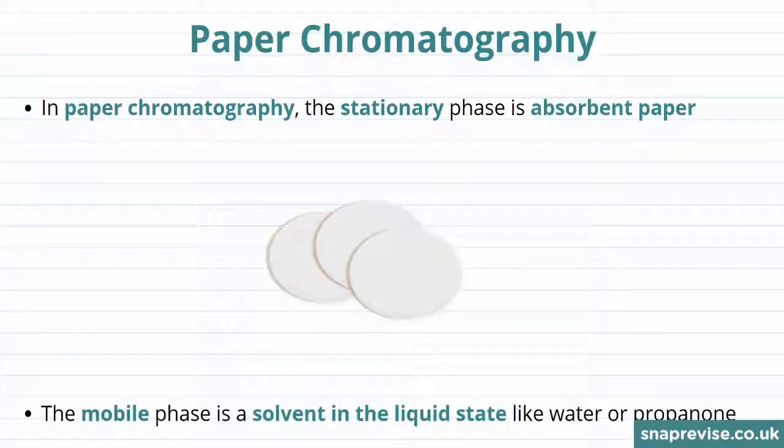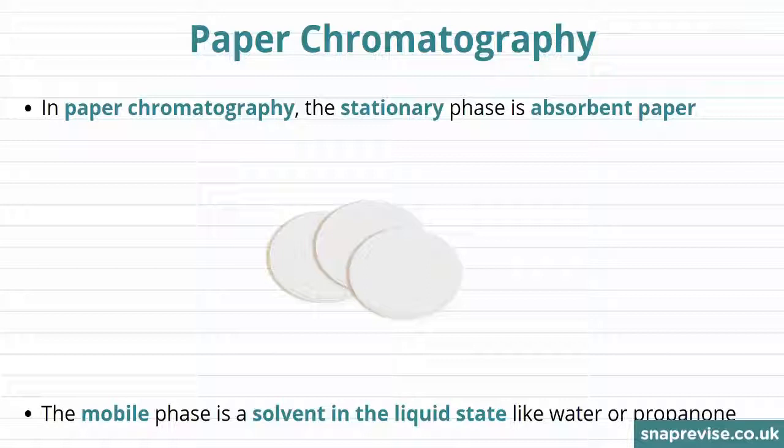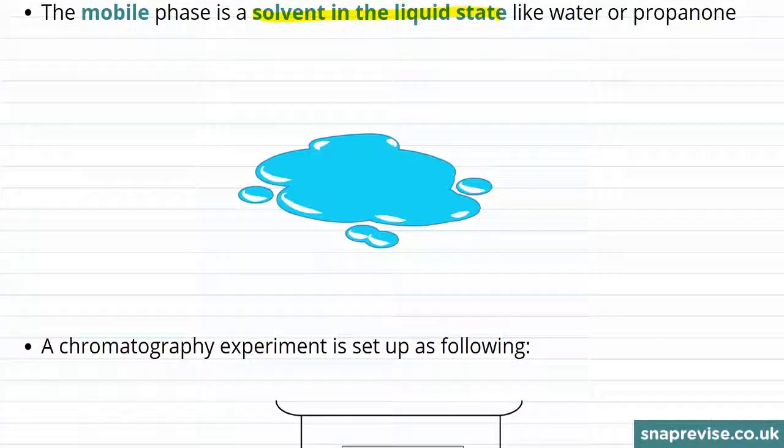Let's look in more detail at one specific type of chromatography: paper chromatography. In paper chromatography, the stationary phase where the molecules can't move is just absorbent paper and the mobile phase is a solvent in the liquid state, for example water or propanone.